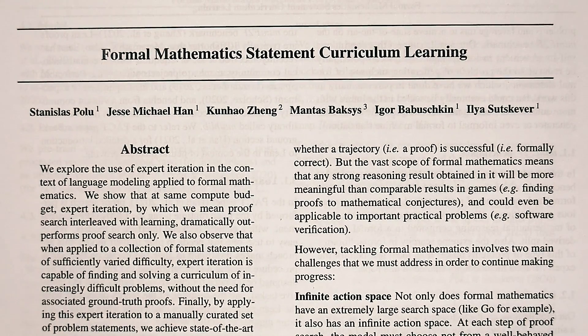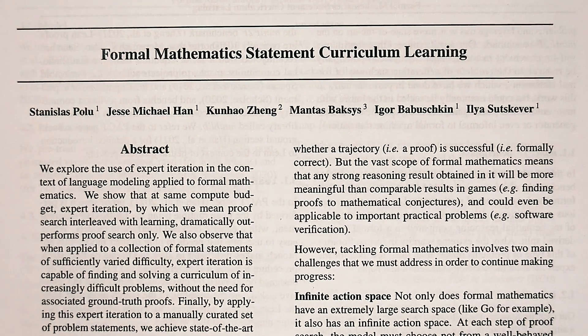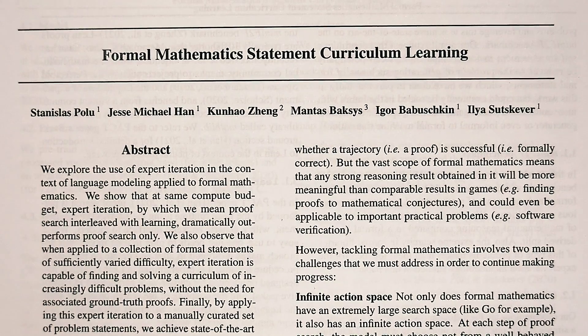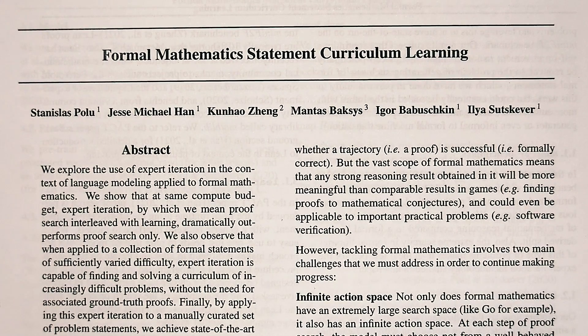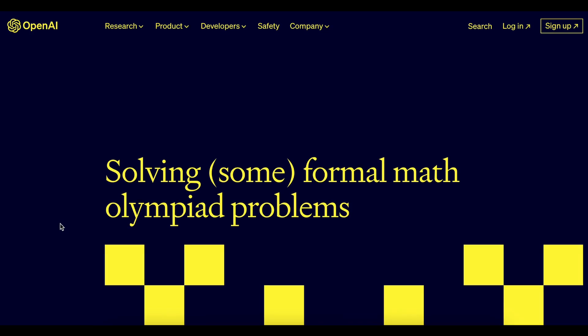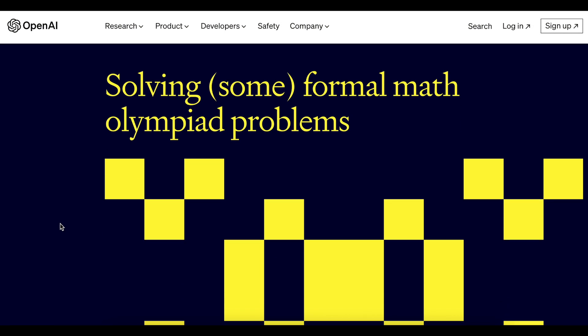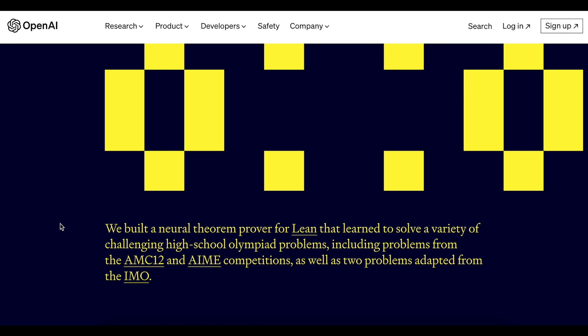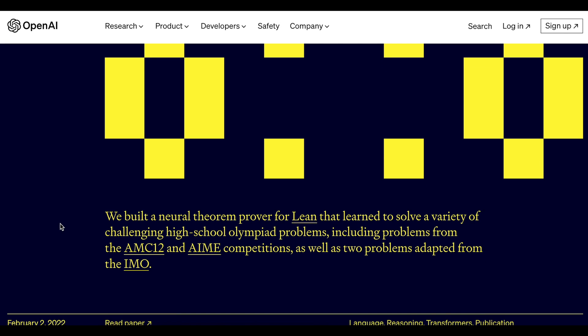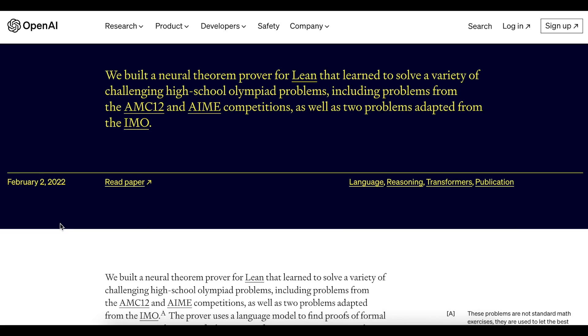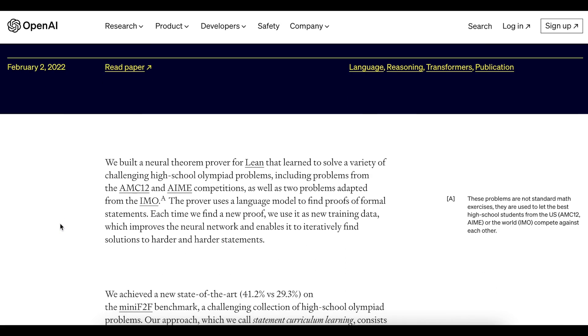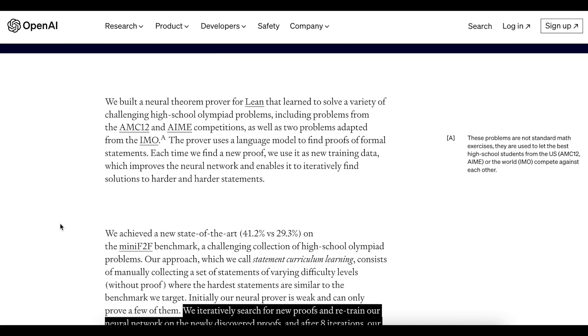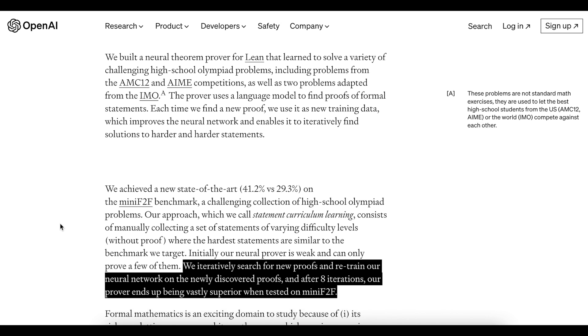It's not a language model but instead is a proof-solving model that speaks the language of formal math. Automated proof solvers have existed for a little while, but this one is trained to iteratively search for new proofs. It takes mathematical ideas that need to be proved and breaks them down into smaller and smaller statements that are easier to prove until there's nothing left to prove.